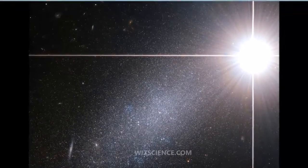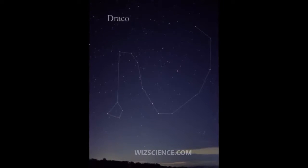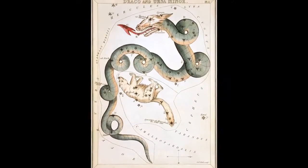Thuban was the northern pole star from 3942 BC when it moved farther north than Theta Boötis until 1793 BC.